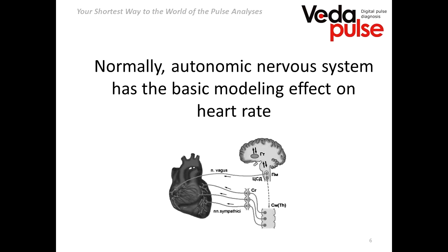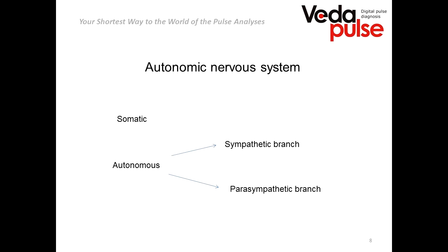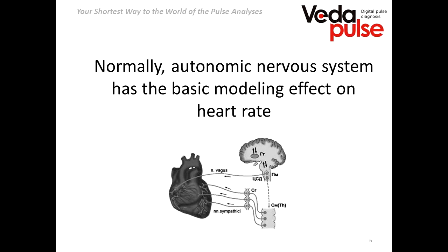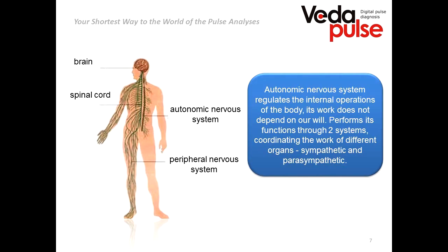Let's start with the influence of the vegetative nervous system. It is exactly the vegetative nervous system that has the strongest effect on the heart rate — in normal conditions it modulates the heart rate most of all. You can see on the screen many nerves located near the heart and connected to it, all belonging to the vegetative nervous system. We sometimes call it the first level of nervous regulation. The vegetative nervous system has two different divisions: the first is the sympathetic, and the second is the parasympathetic.